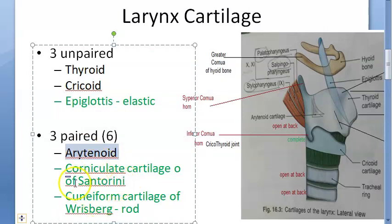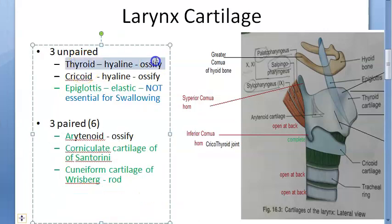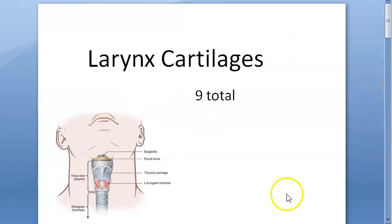The tip of the arytenoid is elastic. The hyaline cartilages — thyroid, cricoid, and arytenoid — can ossify, and after ossification they will appear like foreign bodies on X-ray. Ossification begins at age 25 and is complete by age 65.